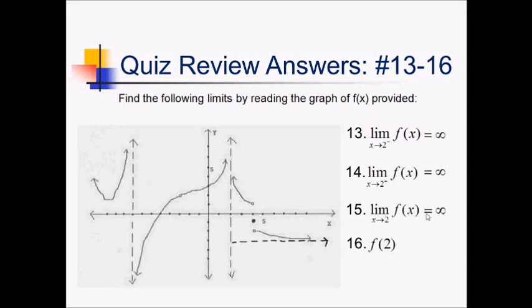You could also say it's DNE. Technically, that's true on all of these, but this is the most specific type of DNE. And now f of 2, again, no solid dots on this asymptote, so this is DNE.